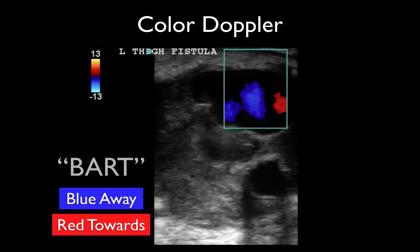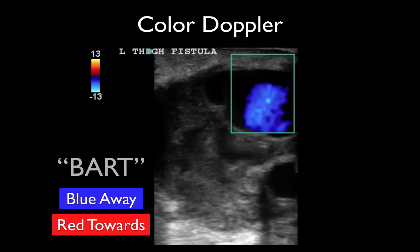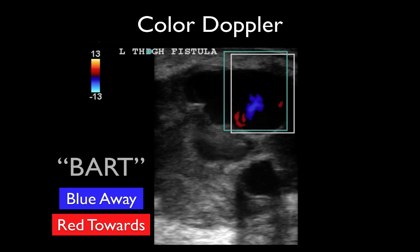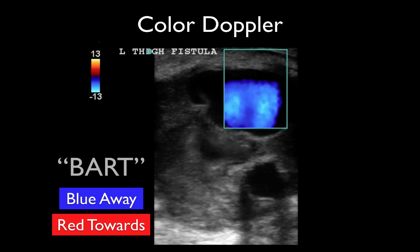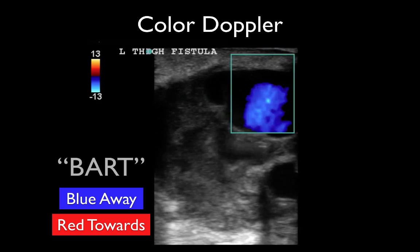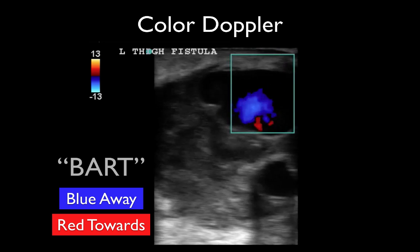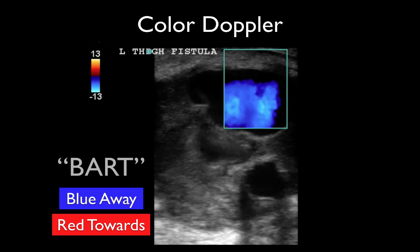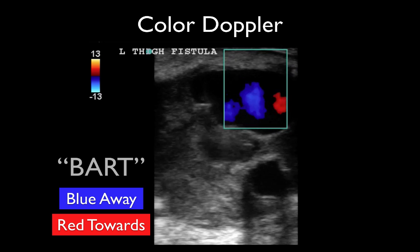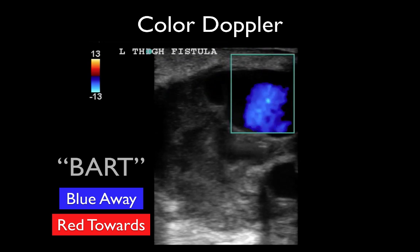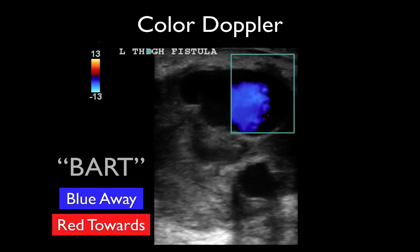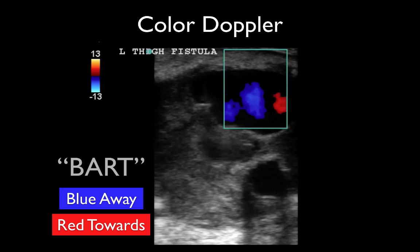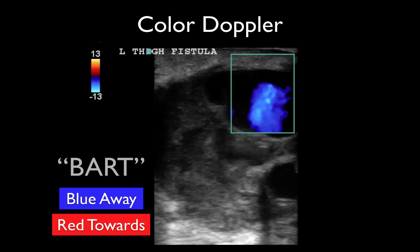Color Doppler relies on the same effect. Essentially, the probe interprets the sound waves as they bounce back off structures, and the machine determines whether the returning sound wave has increased or decreased in frequency.